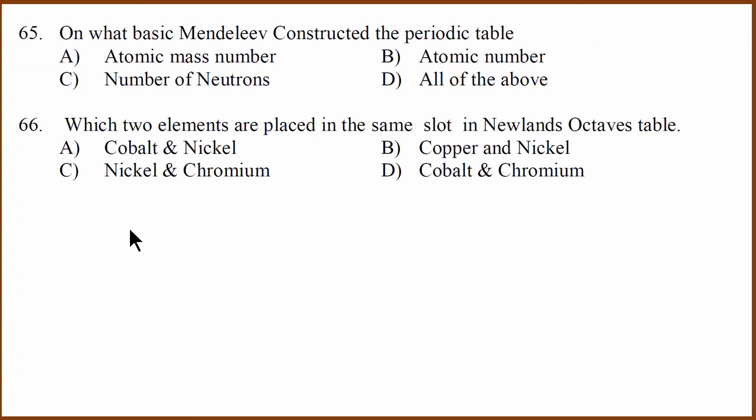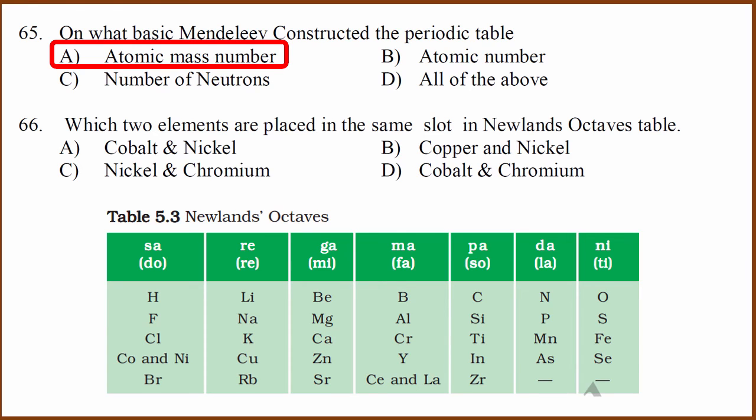On what basis did Mendeleev construct the periodic table? He constructed it on the basis of atomic mass number. That's A is the answer. Which two elements are placed in the same slot in Newlands octave table? Two elements are placed in the same slot. Cobalt and nickel is one option. The other option is this, but this is not given as an option. So we say cobalt and nickel.